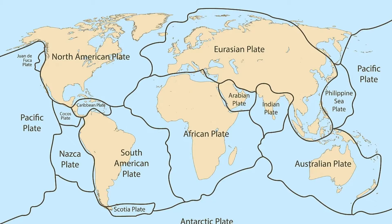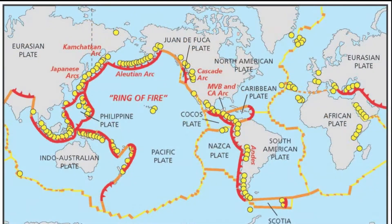Most volcanoes are found along the edges of tectonic plates, which are constantly moving apart and even pushing against each other. This map shows the location of volcanoes around the world as well as the tectonic plates. Volcanoes are shown as small yellow circles. Tectonic plate boundaries are shown by yellow and red lines — yellow for divergent plates and red for convergent plates.